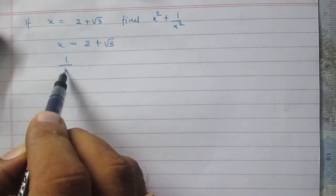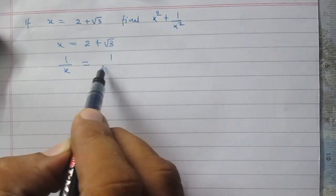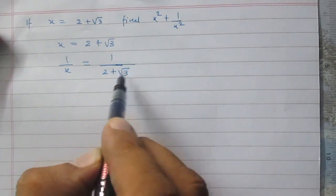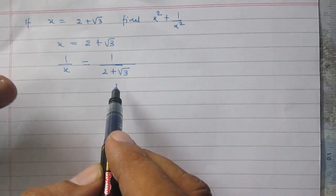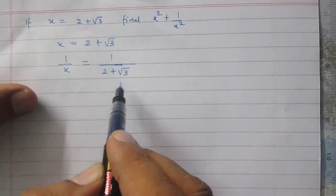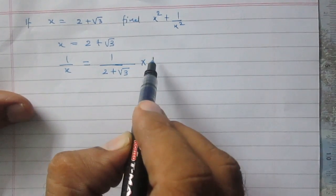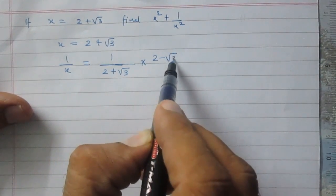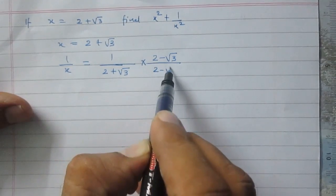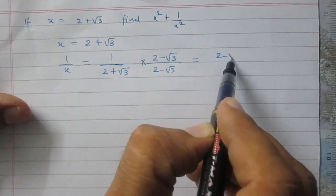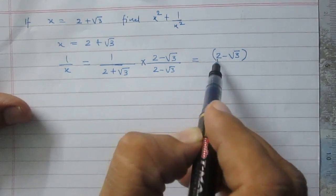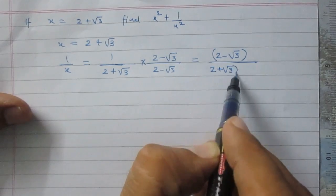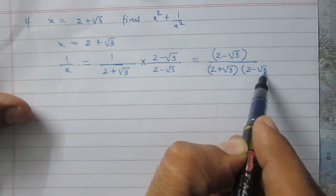Let us consider 1 upon x. 1 upon x is equal to 1 divided by 2 plus square root 3. It is a fraction with an irrational denominator, so in order to rationalize it, we will multiply the numerator and denominator both with 2 minus square root 3. We will have 2 minus square root 3 divided by the multiplication of 2 plus square root 3 and 2 minus square root 3.